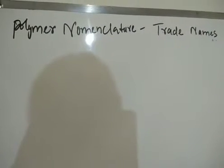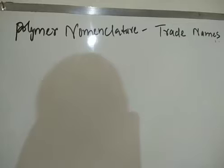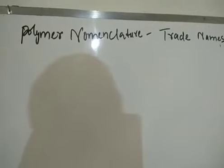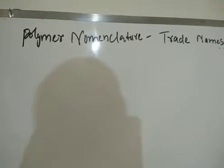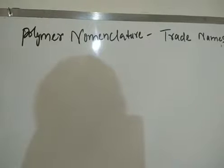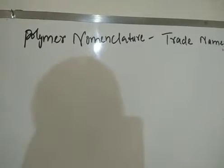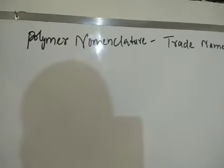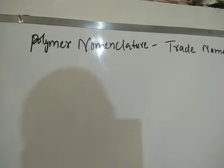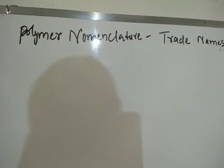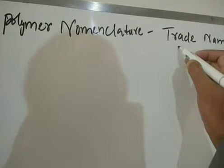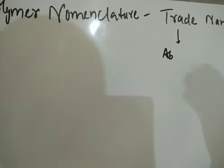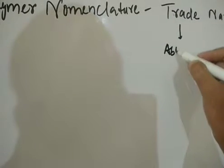Bismillah ar-Rahman ar-Rahim. Today we will be dealing with the third nomenclature, the third type of nomenclature of polymers. So far we have studied two nomenclatures: one based on structure and one based on source. The third nomenclature is also called the trade-based nomenclature, or abbreviation-based nomenclature. It is simply the abbreviation of the name.